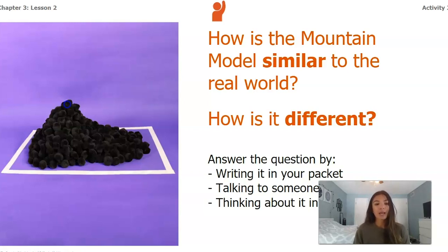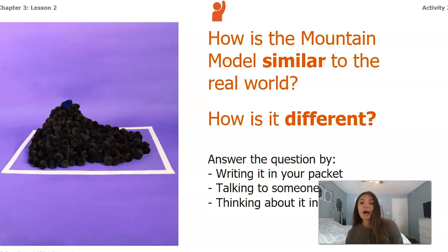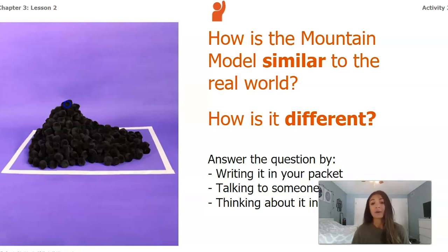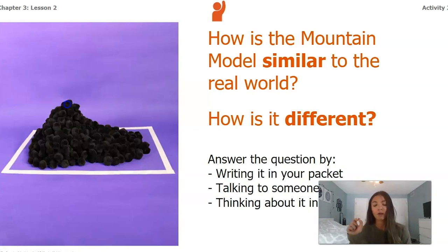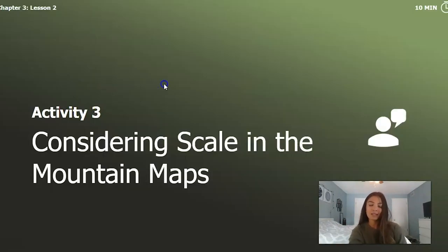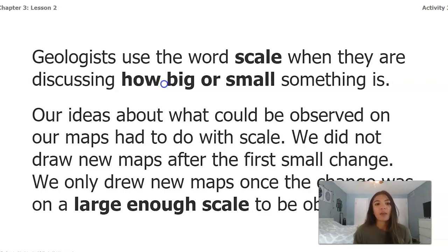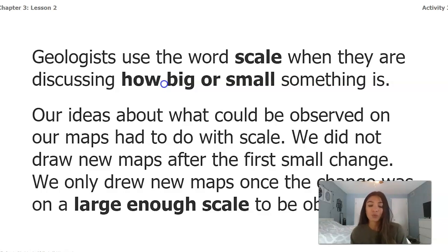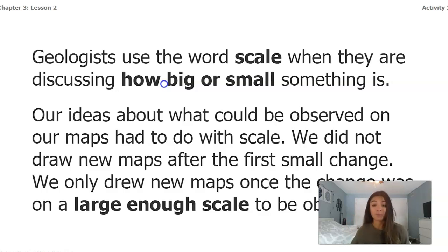Some differences: our model is made out of soft cotton balls, whereas a mountain is much harder because it's made out of rock. Another difference is that we're using our hands to take the pom-poms off, whereas erosion on a mountain is normally caused by something else like weather — not just somebody taking a tiny rock off. Geologists use the word 'scale' when discussing how big or small something is. We did not draw new maps after the first small change; we only drew new maps once the change was on a large enough scale to be observed.